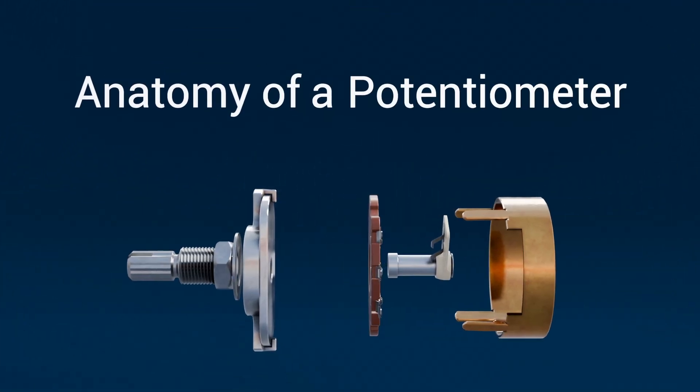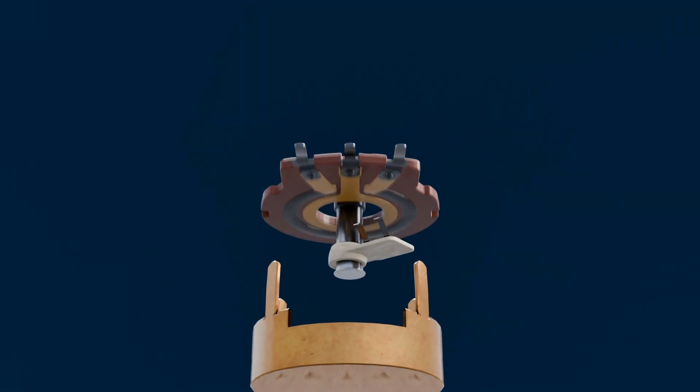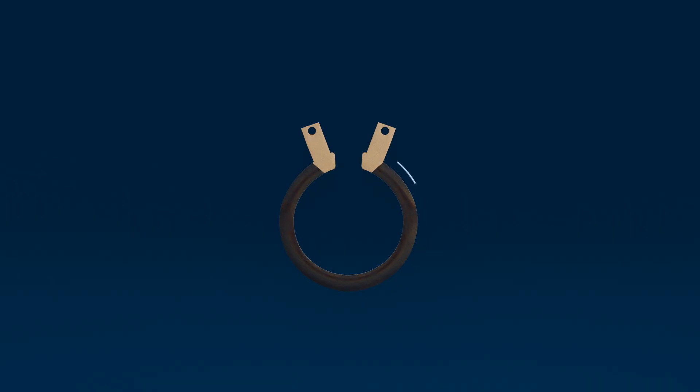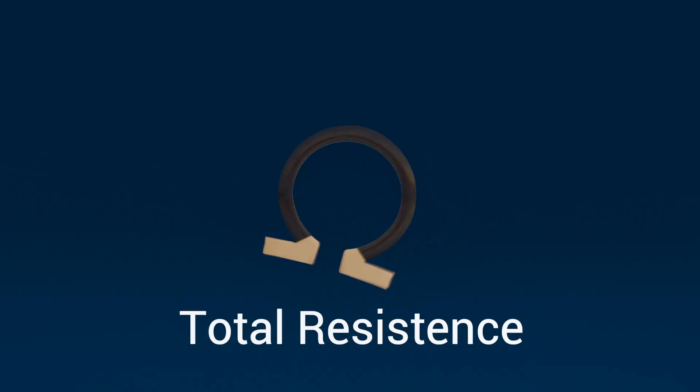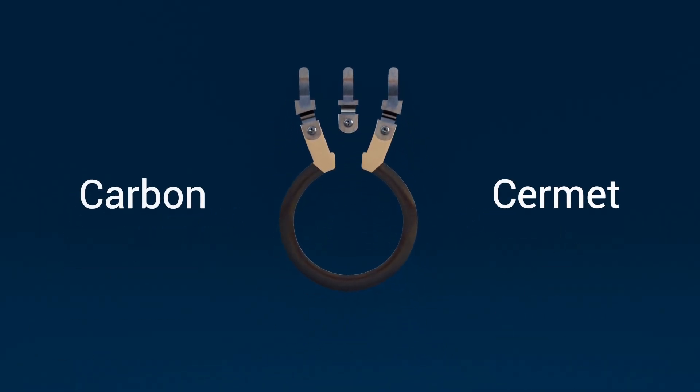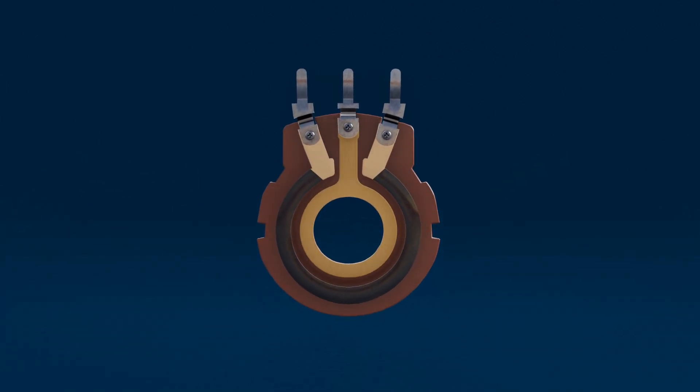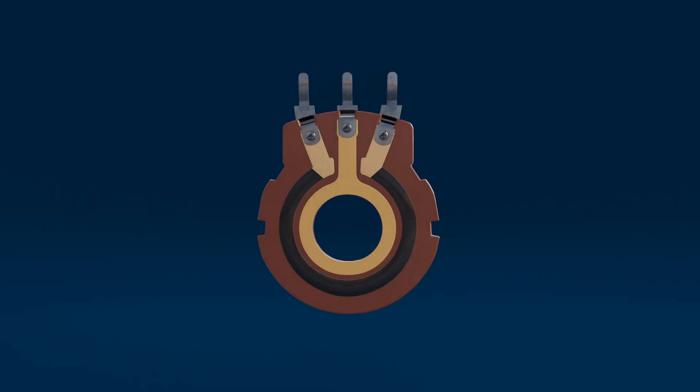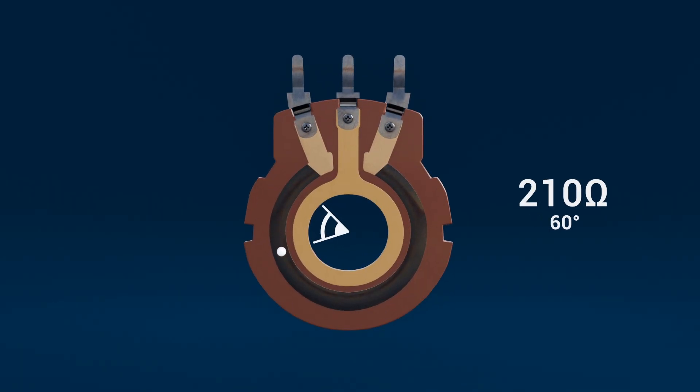Anatomy of a potentiometer. Inside the housing, the main first part you'll find is the resistive track. This is the curved or straight strip that gives the potentiometer its total resistance between the two end terminals. It's usually made from carbon, cermet, or a conductive plastic material bonded to an insulating substrate. The material, track geometry, and mechanical design all influence how the potentiometer feels when you turn it, whether it's smooth, slightly gritty, or very precise.